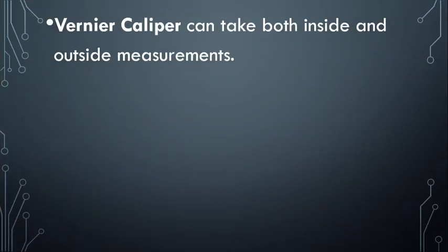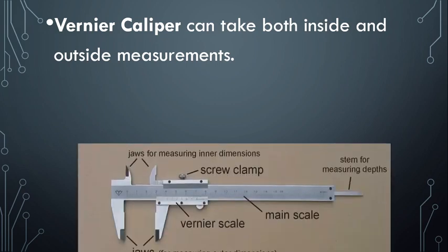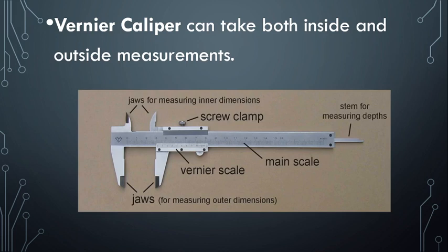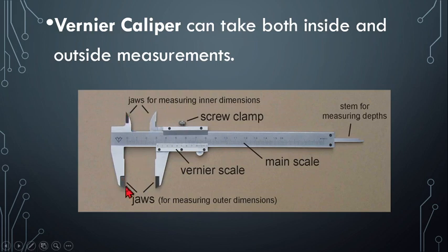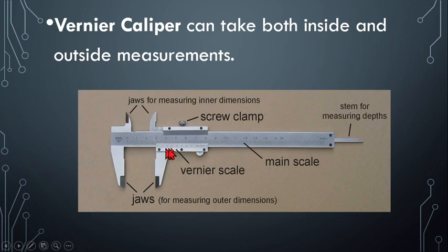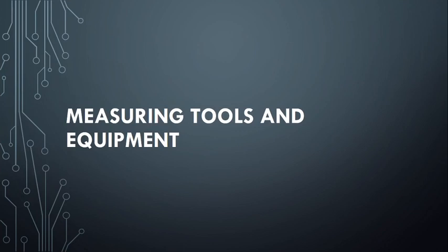Next we have the vernier caliper, which can take both inside and outside measurements. The jaws are used for measuring — one set for inside diameter and another for outside diameter. Subtracting the outside minus the inside diameter gives you the gauge or thickness of a pipe. It works like a ruler but you have to consider the increments on the vernier scale part.